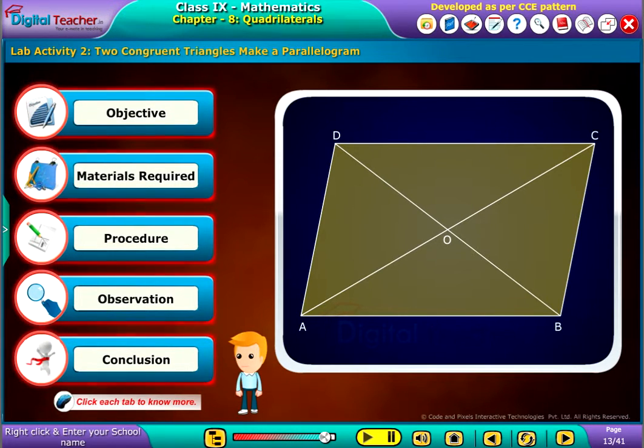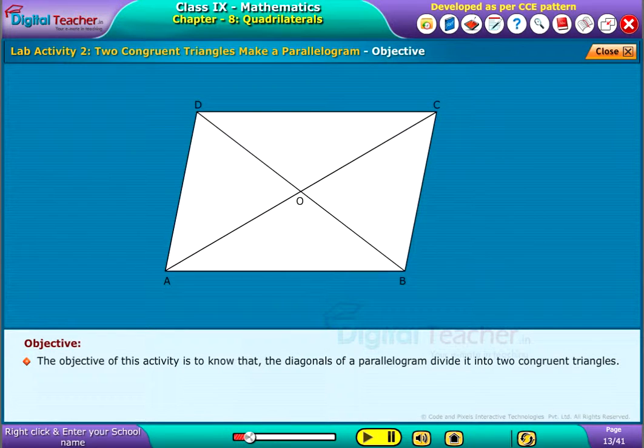Click each tab to know more. The objective of this activity is to know that the diagonals of a parallelogram divide it into two congruent triangles.